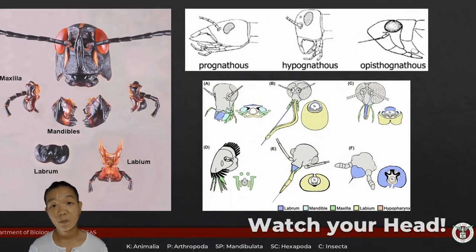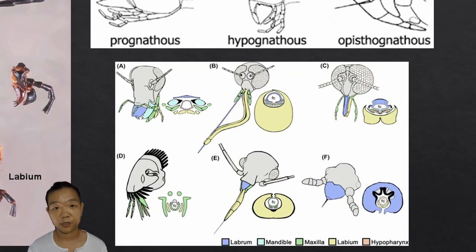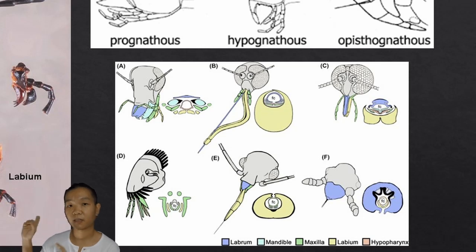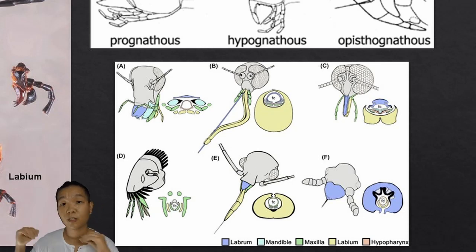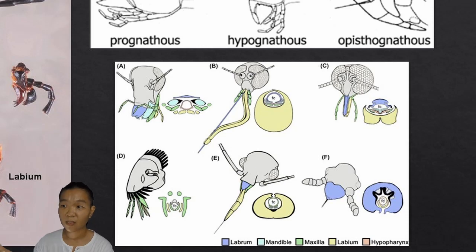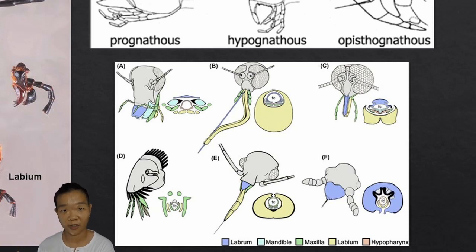Insect mouth parts have evolved into different variations, depending of course on the diet of the insect. Don't expect that this is the only way you're ever going to see these mouth parts. Although they look different, the main structures — mandibles, maxillae, labrum, labium — they just look different, but they're all still there.